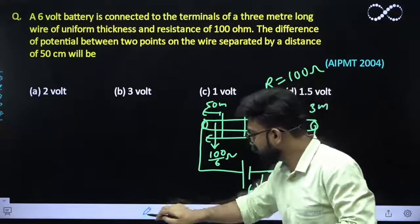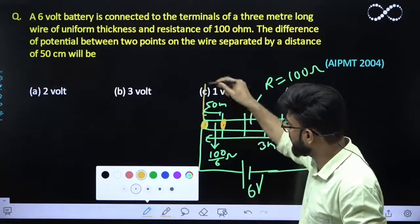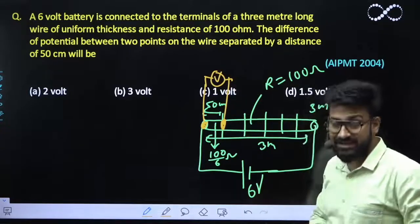So what would be the potential difference that you need to find out across these two terminals? If we apply a voltmeter over here, what would be its reading? That you need to find out.